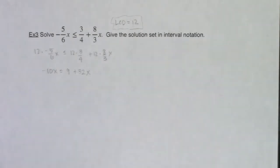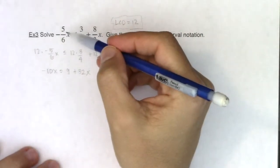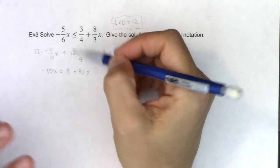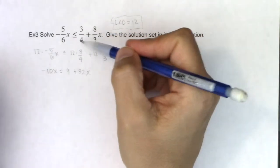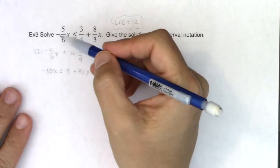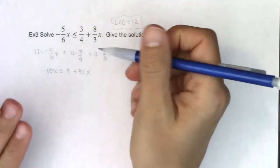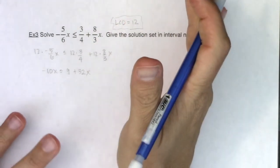And let me tell you though, if you had wanted to subtract 8 thirds x from both sides and solve it that way, you totally could have. If you wanted to add 5 sixths x over here but subtract the 3 fourths, that would work also. So those are totally viable options.